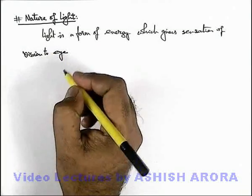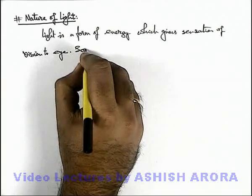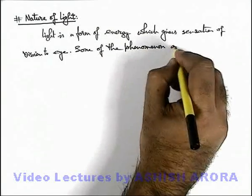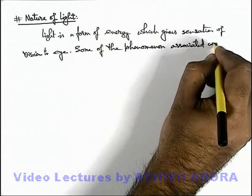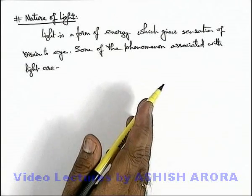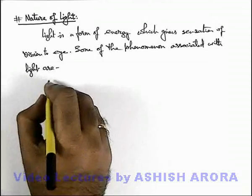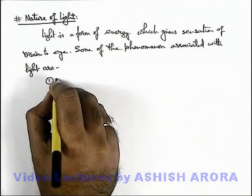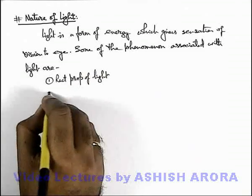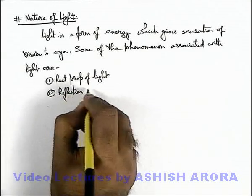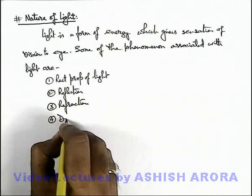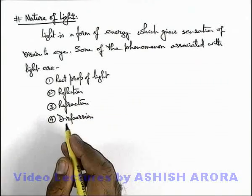We all know that our vision is mainly because of light. Some of the phenomena associated with light are — there are various phenomena related to light we'll study in future, but right now: the very first one which we've studied in geometrical optics is rectilinear propagation of light, reflection of light, refraction of light, and dispersion of light. These all phenomena we've already studied in previous topics.